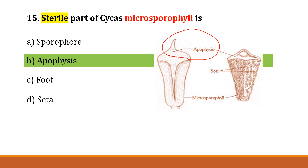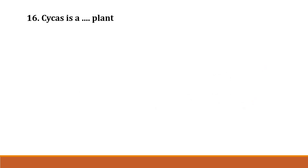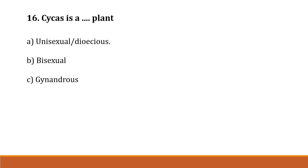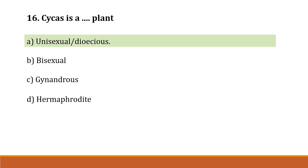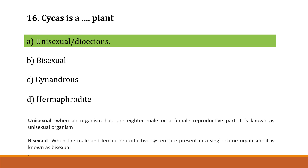Question number 16: Cycas is a plant that is Option A: unisexual or dioecious, Option B: bisexual, Option C: gynandrous, Option D: hermaphrodite. The correct answer is Option A, unisexual or dioecious. Unisexual means when an organism has either male or female reproductive part only. Bisexual means when both male and female reproductive systems are present in the same organism.